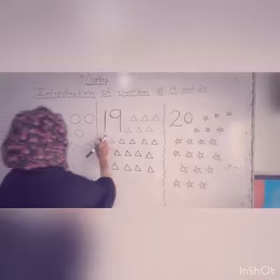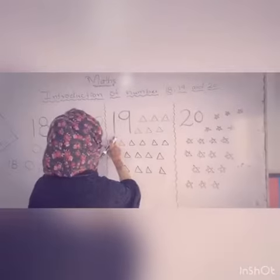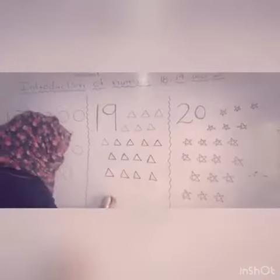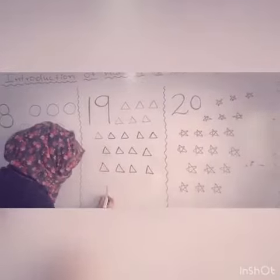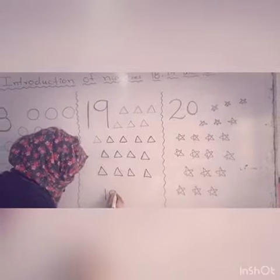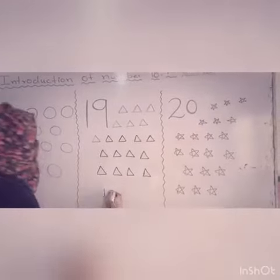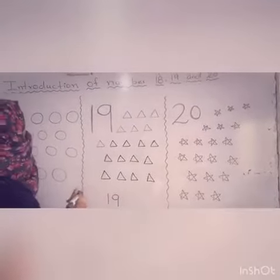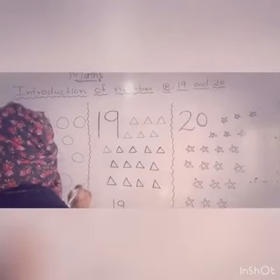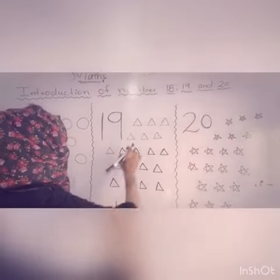Now, tell me which number is this? 1, 9 — 19. Now, look at here. How many triangles are there?